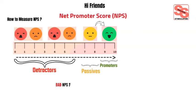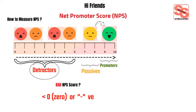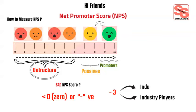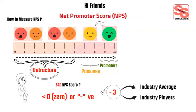What is a bad NPS score? Any score below 0, or any negative score, indicates that a business has more detractors than promoters. Industry NPS benchmarks are useful here. While an NPS score of minus 3 may seem bad in isolation, it's hard to interpret without comparable scores from key industry players. If the industry average was minus 10, suddenly the score would not look as bad. Even so, a negative NPS is a sign that a business has serious work to do to improve the situation, reduce unhappy customers, and generate more promoters.